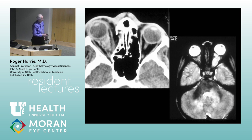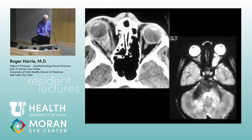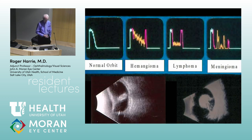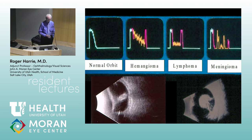Then CTs and MRIs came along with incredible definition of soft tissue, certainly in the orbit and intracranially. Even the globe could show some things. So the question arose: who needs ultrasound with that kind of technology? But there's still a role. Certainly in the globe, it's still superior. You can see detail you can't find otherwise, especially with high frequency — UBMs can get down to the micron level.